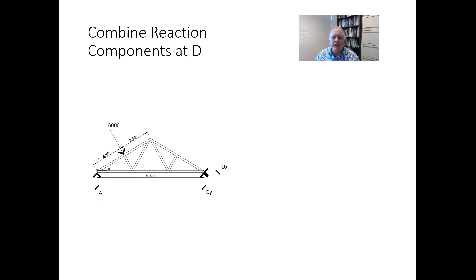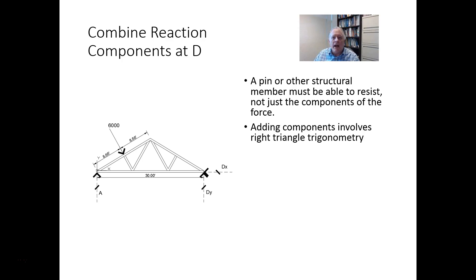So now we're going to combine the reactions at D to get the combined force at D. This is not necessary for the problem, but I think you need to know how to do this. A pin or structural member must be able to resist not just the components of the force, but the force itself. Adding the components involves right triangle trig. The Pythagorean theorem states that the hypotenuse is equal to the square root of the sum of the short sides. So Dx squared plus Dy squared. Take that sum and take the square root of it. In this case, 3,000 squared plus 1732 squared is equal to a sum that we take the square root of and get 3464 pounds.